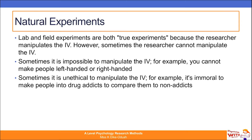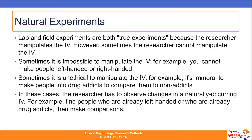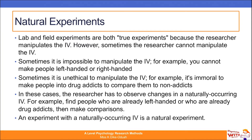Or in the case of split brain research, which we've been looking at recently, it's unethical to split people's brains just for the purpose of your research. In these cases, the researcher has to observe changes in a naturally occurring independent variable — for example, find people who are already left-handed or who are already drug addicts, then make comparisons. So a natural experiment is an experiment with a naturally occurring independent variable.